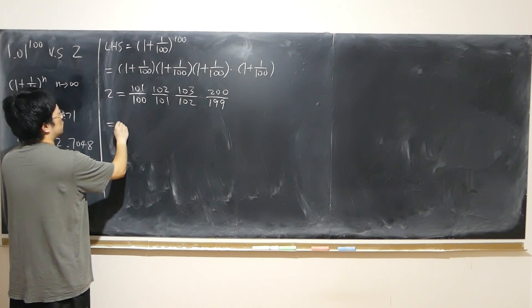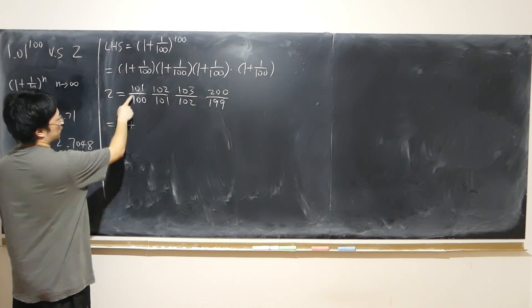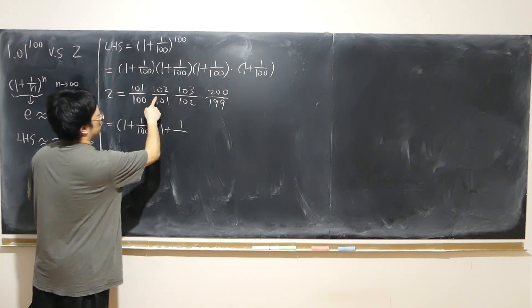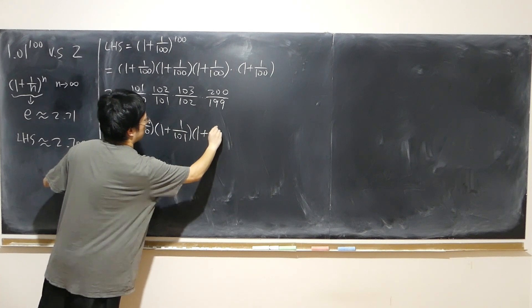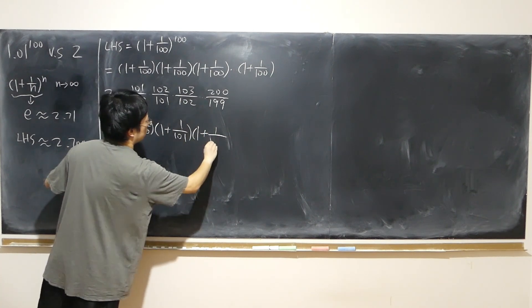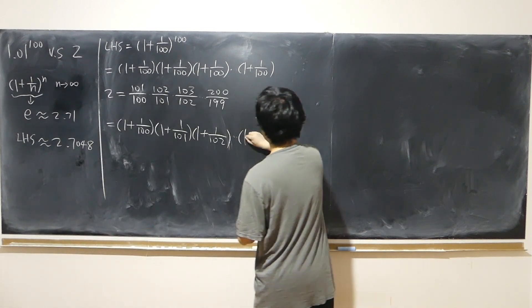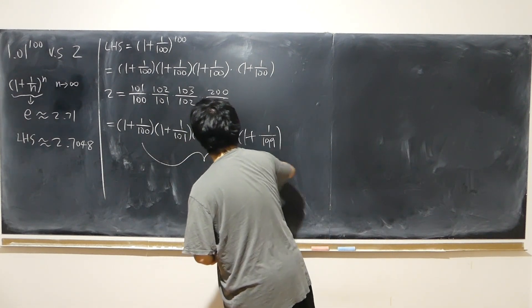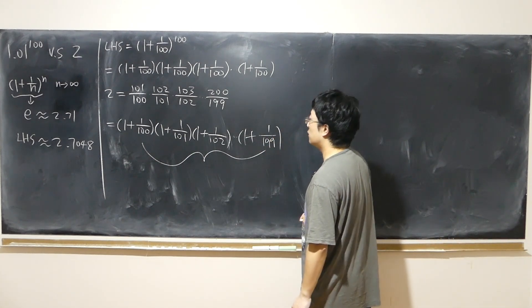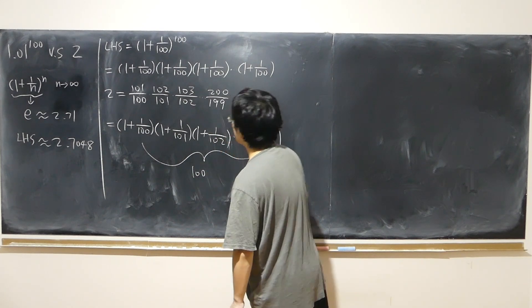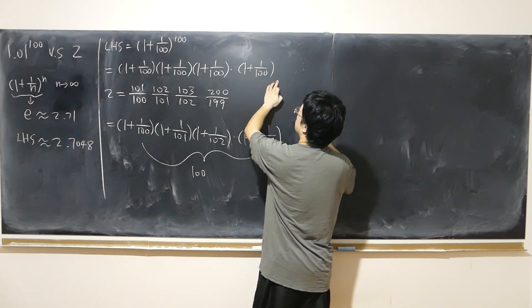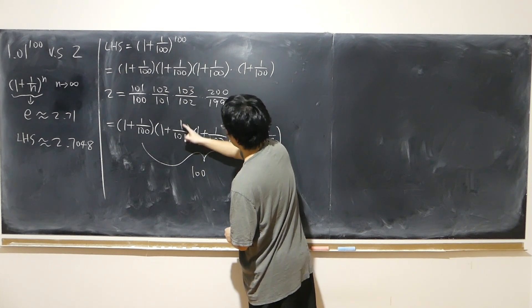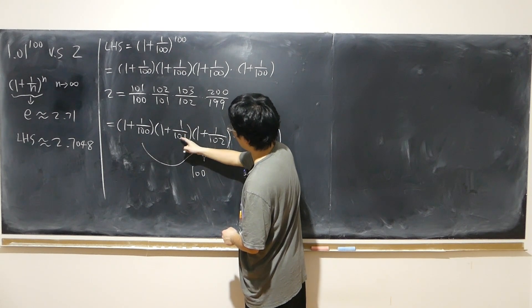I can also separate each fraction: (101/100) = 1 + 1/100, (102/101) = 1 + 1/101, (103/102) = 1 + 1/102, all the way to 1 + 1/199. That gives exactly 100 brackets. The left-hand side also has exactly 100 brackets of (1 + 1/100).